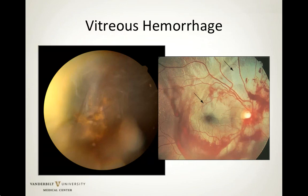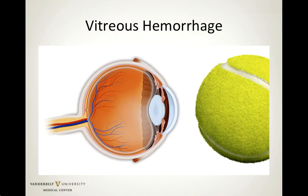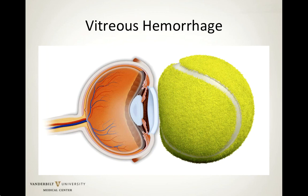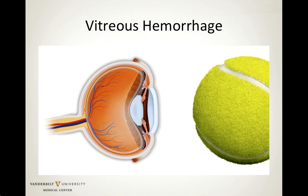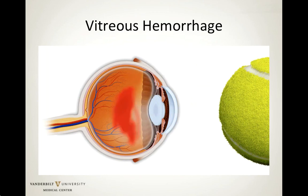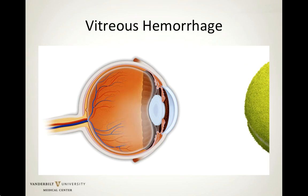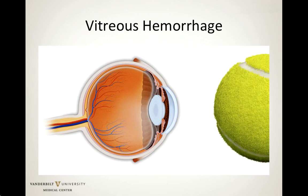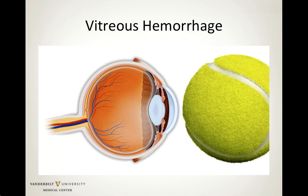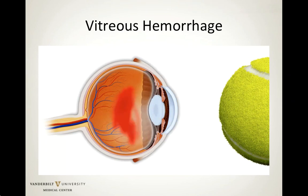Vitreous hemorrhages occur because ocular trauma has led to torn or traumatized vessels from the retina, iris, or ciliary body. Vitreous hemorrhage is most often caused by blunt trauma but can also result from penetrating or perforating types of injury to the posterior segment.